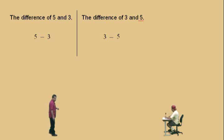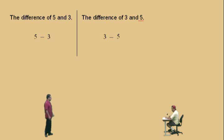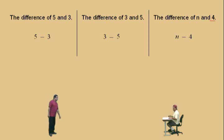So remember, 5 subtract 3 is 2, and 3 subtract 5 is negative 2 — these are two different answers. It doesn't work the same as when you were adding numbers. 5 plus 3 and 3 plus 5 is 8, but you cannot do this with a difference. Don't make those mistakes. Okay Charlie, the difference of n and 4. Very nice there, Charlie.